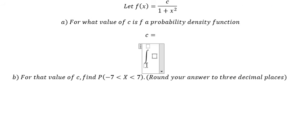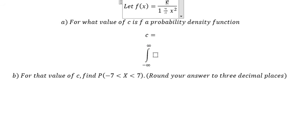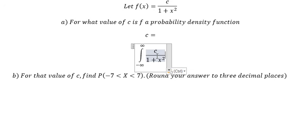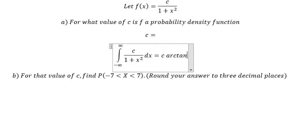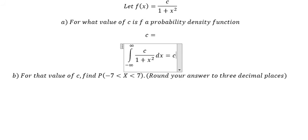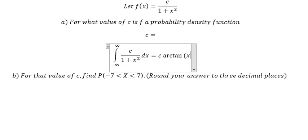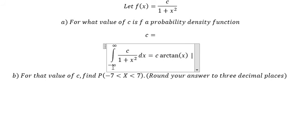We need to put the integral from negative infinity to positive infinity. We have the function: the integral of 1 plus x squared in the denominator, times c. We put the bounds from negative infinity to positive infinity.